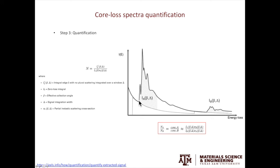On the left is the quantification equation. N is the number of atoms in the probed volume. N is equal to IK over I0 multiplied by sigma K. IK is the integral edge K intensity without the background, without the plural scattering. K here indicates the K edge. I0 is the zero-loss peak intensity. Sigma K is the partial inelastic scattering cross-section.